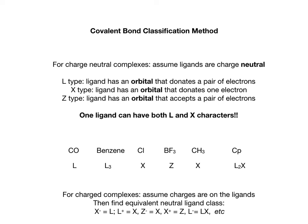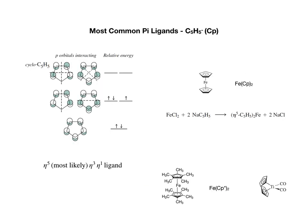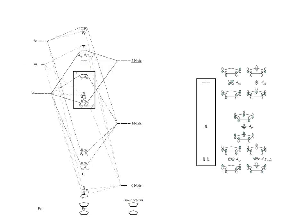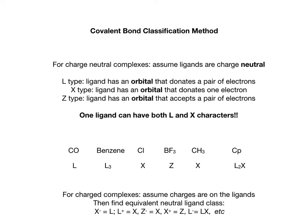Methyl group is another X-type ligand. And Cp — this is the complication we discussed before. In the MO diagram, there are three MOs with electrons: two of the MOs are filled with a pair of electrons, and the third one is filled with only one single electron. So this makes Cp, in its charge-neutral form, a 2L plus X type of ligand — so that would be L2X. Those classifications are for charge-neutral complexes.